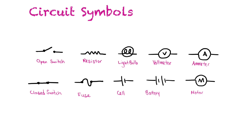Over here is a resistor. Resistors are represented by jagged lines and are put into circuits to slow down the flow of electrons so they don't go too quickly through the circuit, overheat it, and cause problems. This here is a light bulb, represented by a swirling line inside a circle. This here is a voltmeter — voltmeters measure the voltage drop, or the force of electrons moving through a circuit.